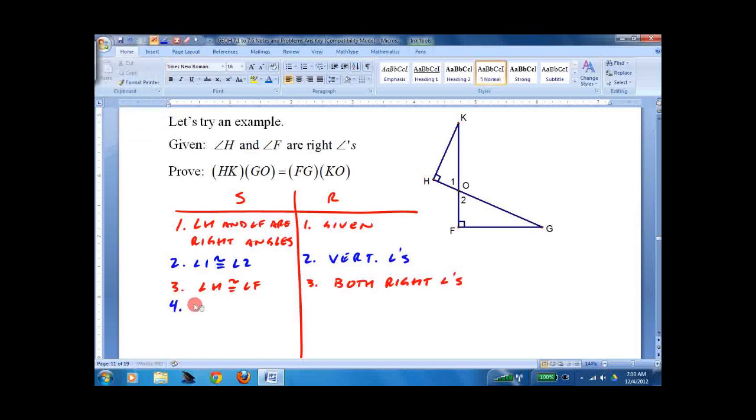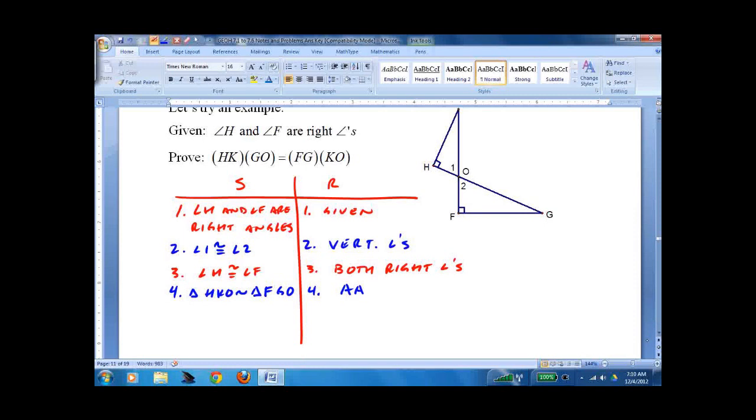What we do need to say is triangle, I'm going to go HKO for the first one, is similar. Be careful. I wanted to write a congruent there. To triangle FGO. And one of the best reasons ever. Because it's only two letters long. Angle, angle.